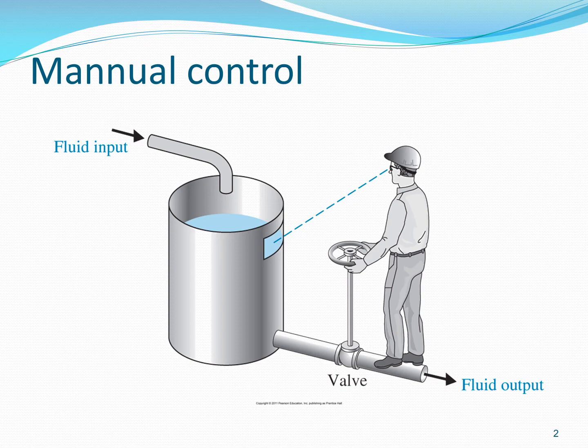The eyes of the person are sensors which measure the actual liquid level in the tank. Inside the brain of the operator, the actual level is compared with the desired level and a decision is taken — so the controller in this case is in the brain of the operator. The decision taken by the brain has to be converted into a physical actuation signal, which is done by the hands of the operator. So the actuator in this case is the hands of the operator.